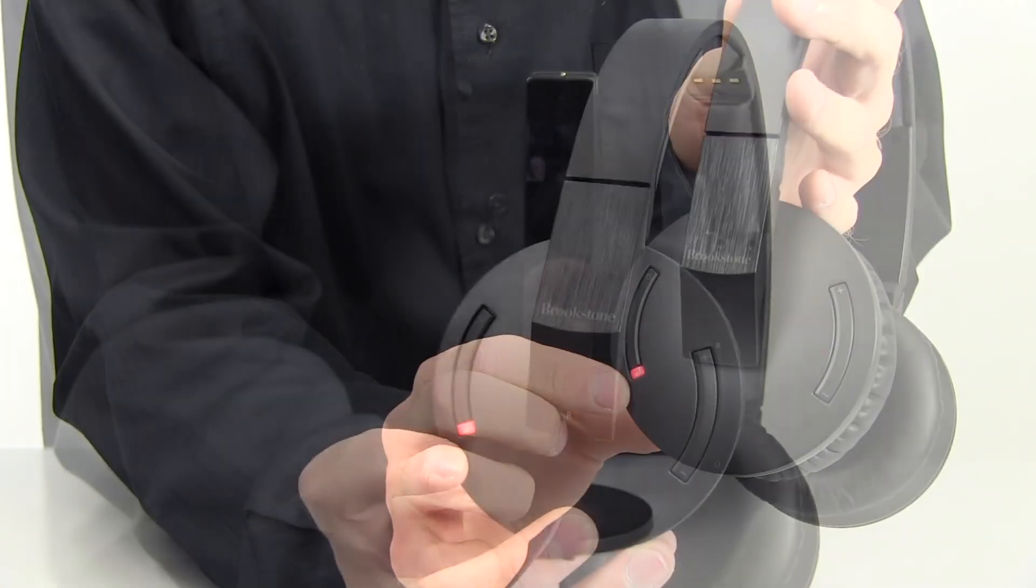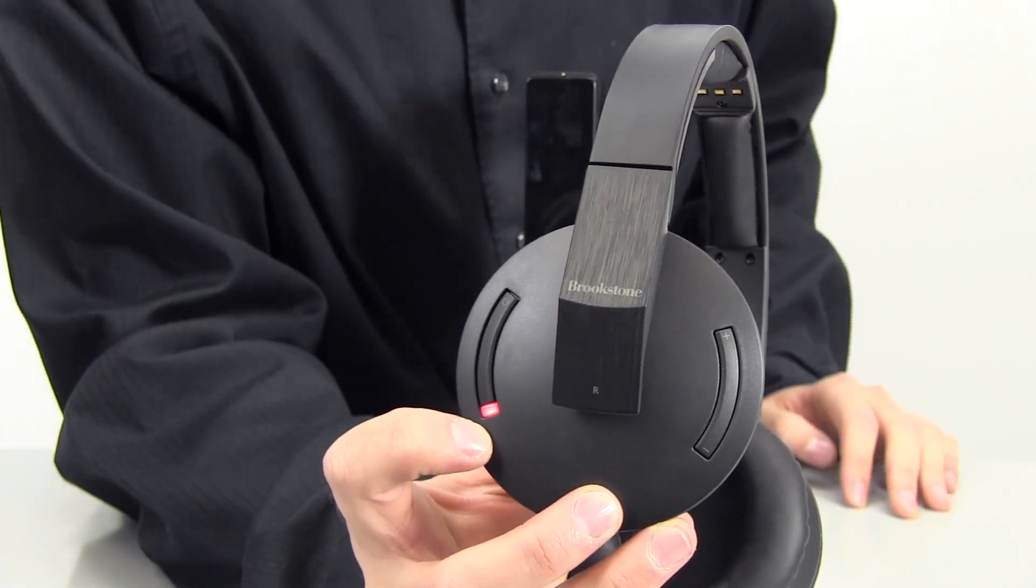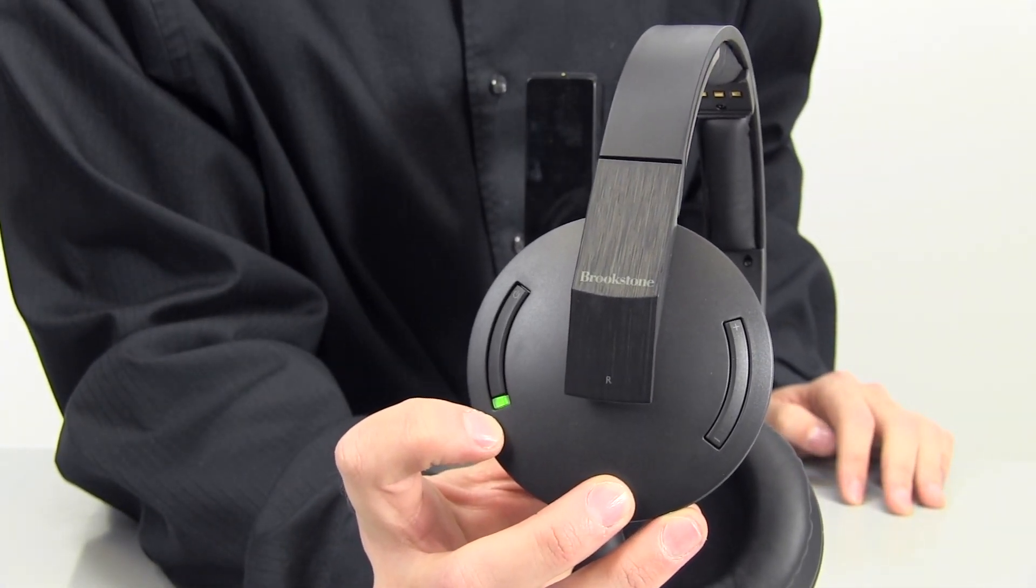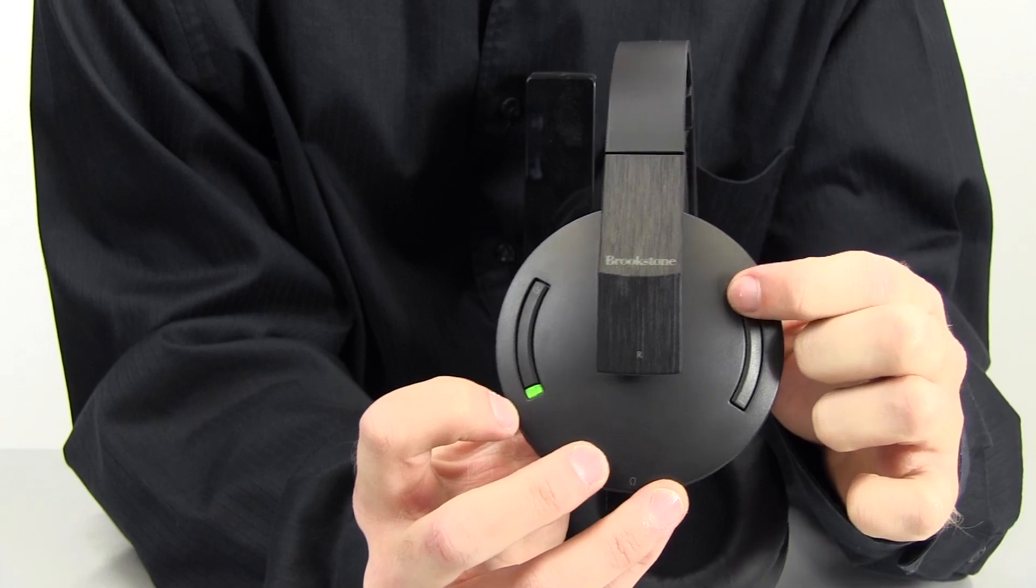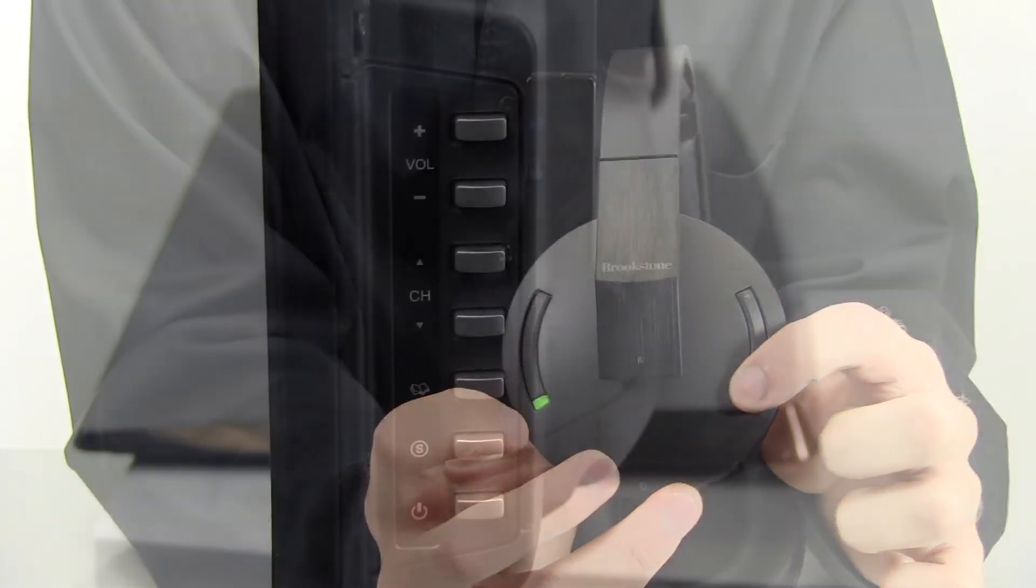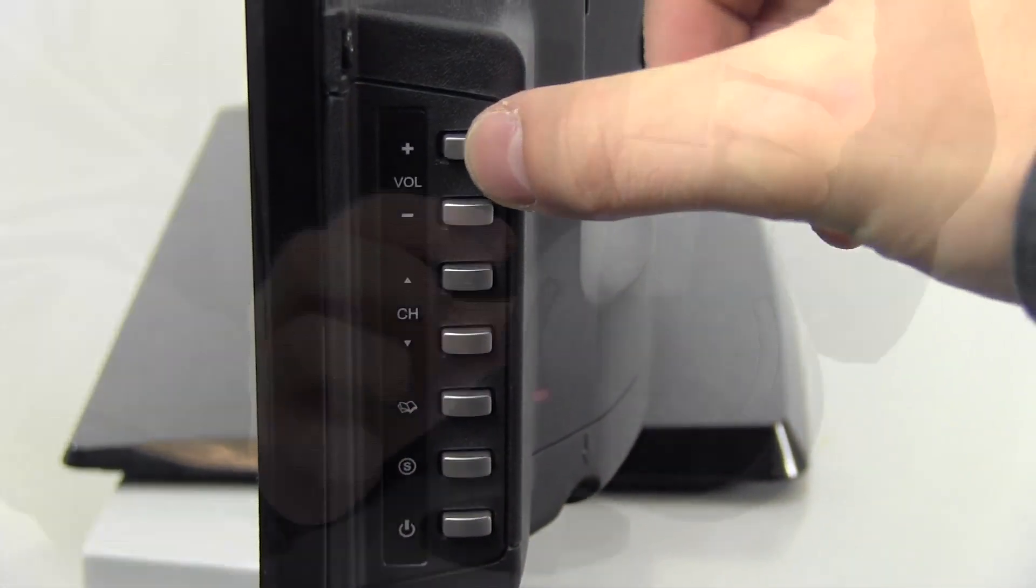The headphones will automatically sync to the transmitter. When the headphones and the transmitter are synced, the power LED is green. You can now use the volume controls on the right earpad and the volume on the audio source to adjust the volume.